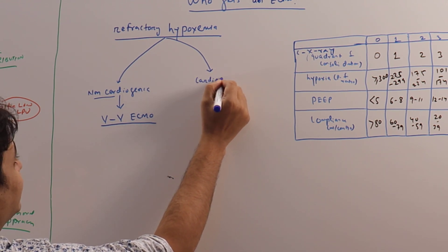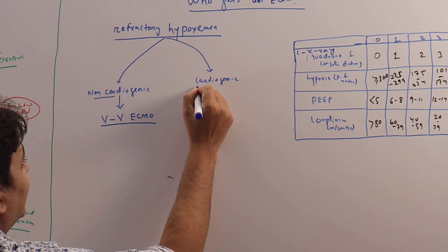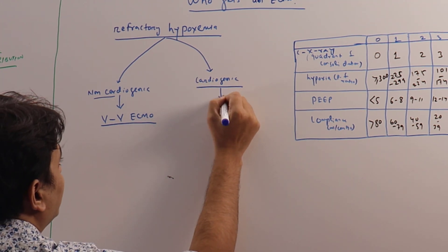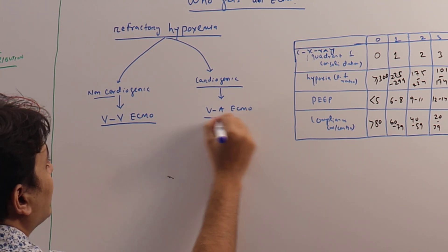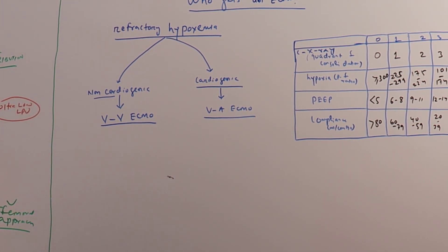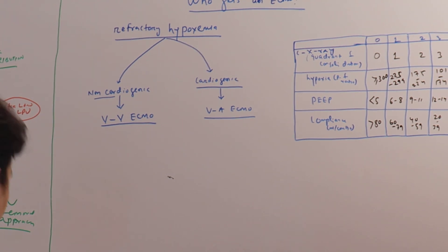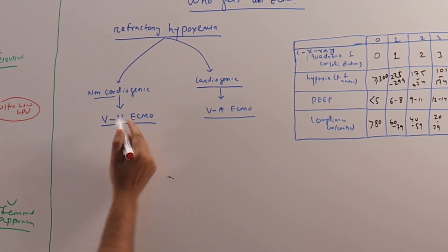However, if it is a cardiogenic process that is driving the refractory hypoxemia, then we will require VA ECMO. This is the simplest way to decide what ECMO and which person will get it. This is true for most of our ARDS patients, including COVID-19 ARDS.